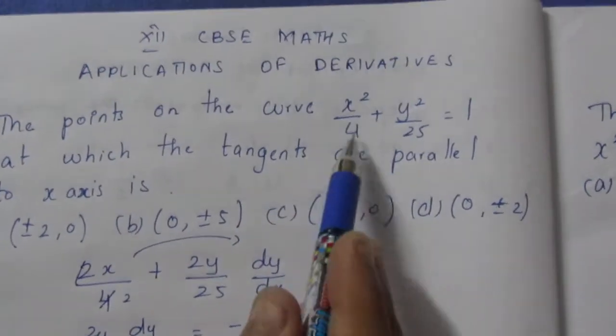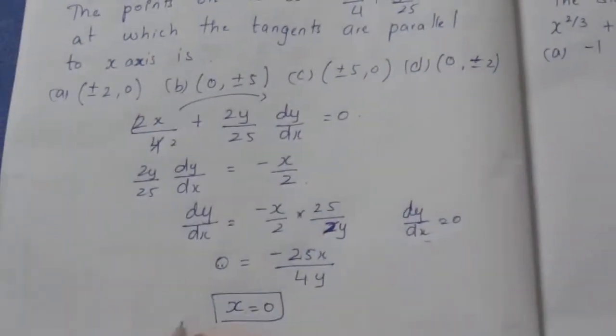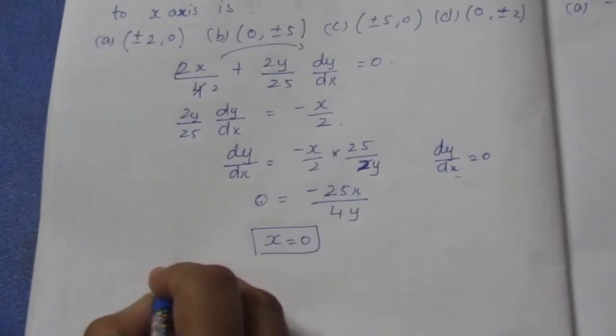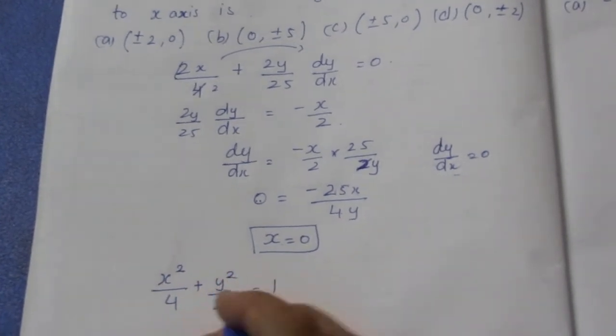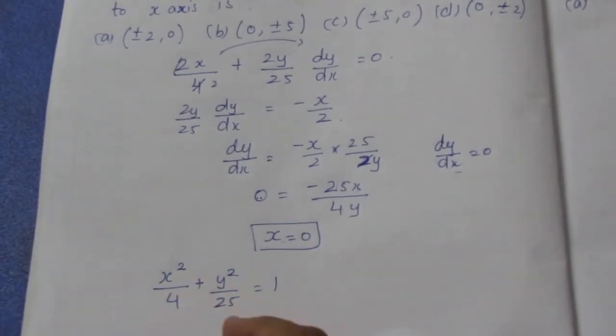As the point x = 0 lies on the curve, we can say that this can be written as x² / 4 + y² / 25 = 1. Taking x = 0, the total thing will become 0. So y² / 25 = 1.